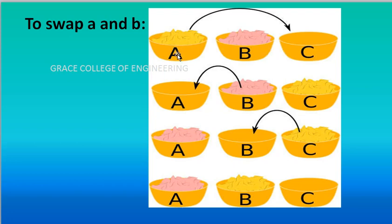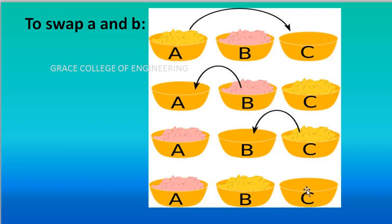Step one: what is present in A will be moved to the temporary variable C. Step two: what is present in B will be moved to A. Step three: what is present in the temporary variable C will be moved to B. So finally, the value originally in A will be in B, and the value originally in B will be in A. The temporary variable is then empty. This is the concept of swapping using a temporary variable.